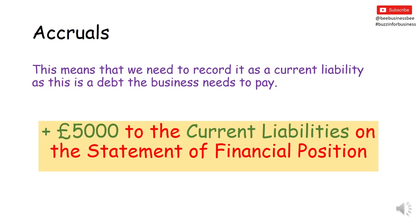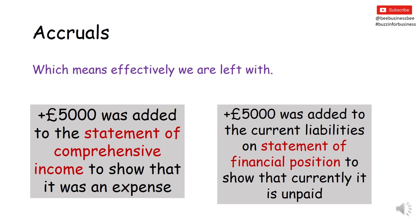That then transfers over from the previous period to the current period, showing that this transaction rolls over and we've accounted for it correctly. The £5,000 was added to the Statement of Comprehensive Income to show it was an expense in the 2019-2020 period, but £5,000 was also added to the current liabilities on the Statement of Financial Position for 2020-2021 accounts because it's currently unpaid.